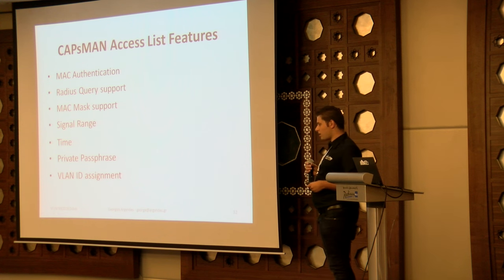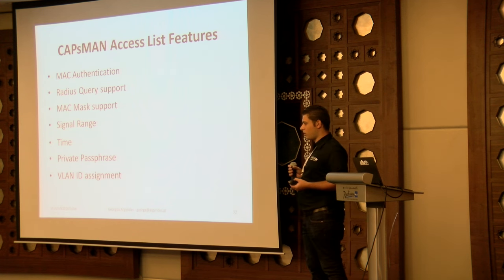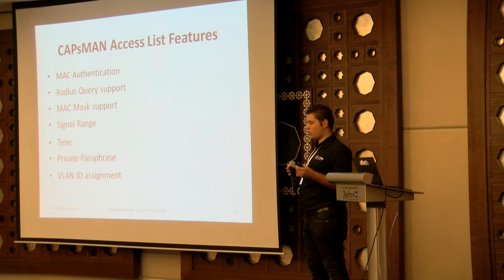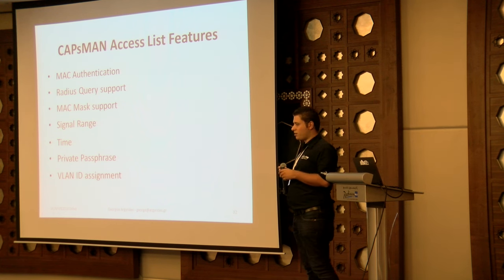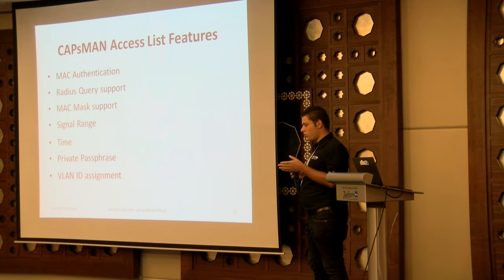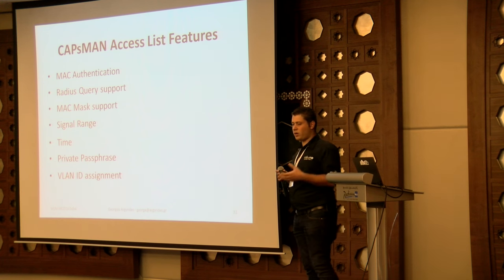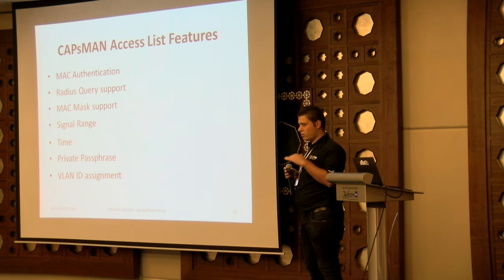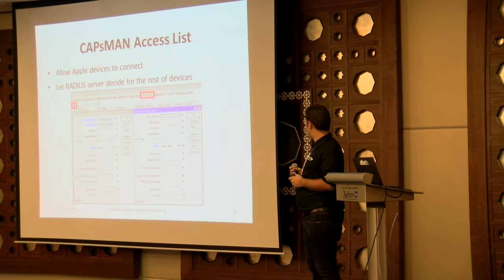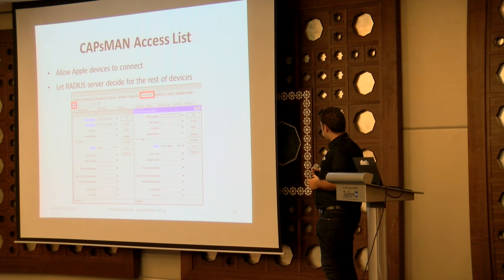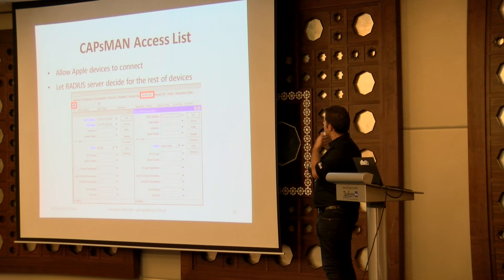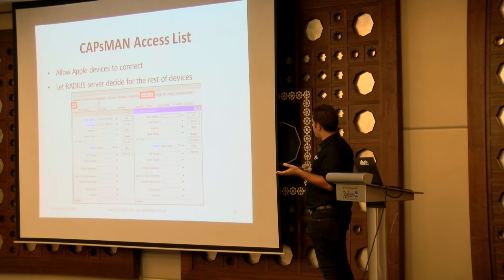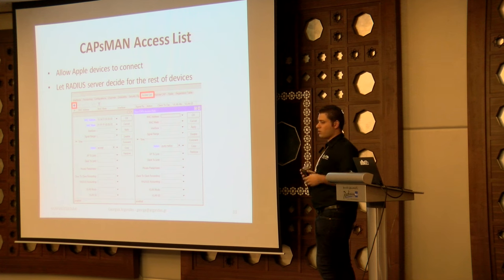We can use an access list, as we do in a regular access point, to restrict people from connecting. We can ban specific MAC addresses or allow certain ones. We can block clients with a poor signal level. We can allow Apple devices to connect and send the rest to a RADIUS server for authentication.